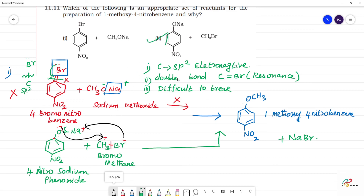The answer is the second reactant set. These two reactants — sodium 4-nitrophenoxide and bromomethane — will give us the desired product, while the other reactant options will not.